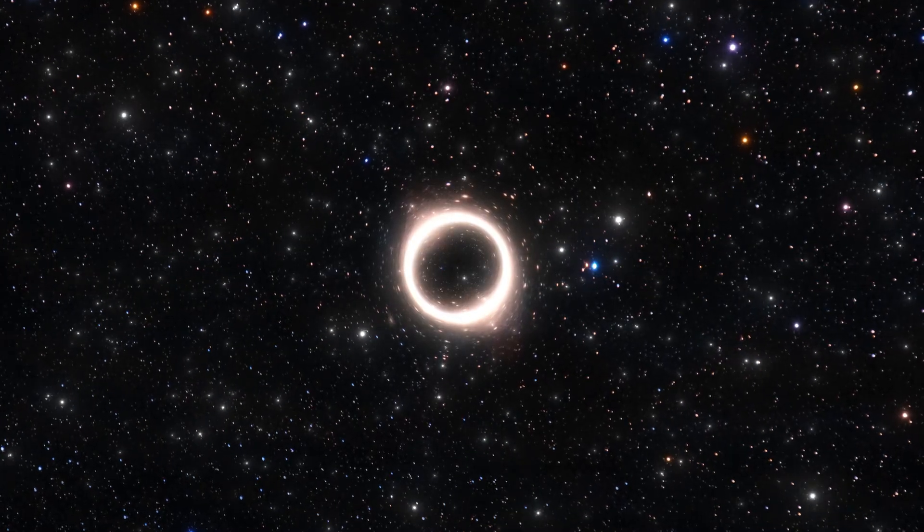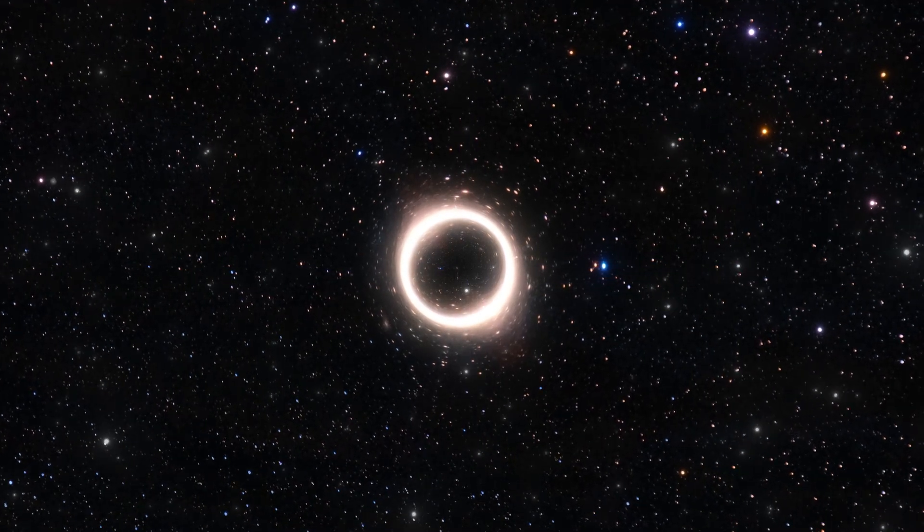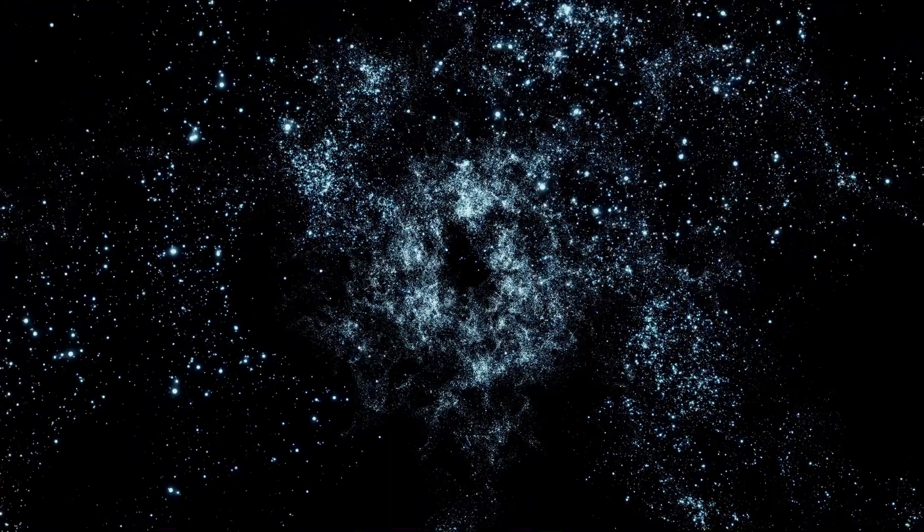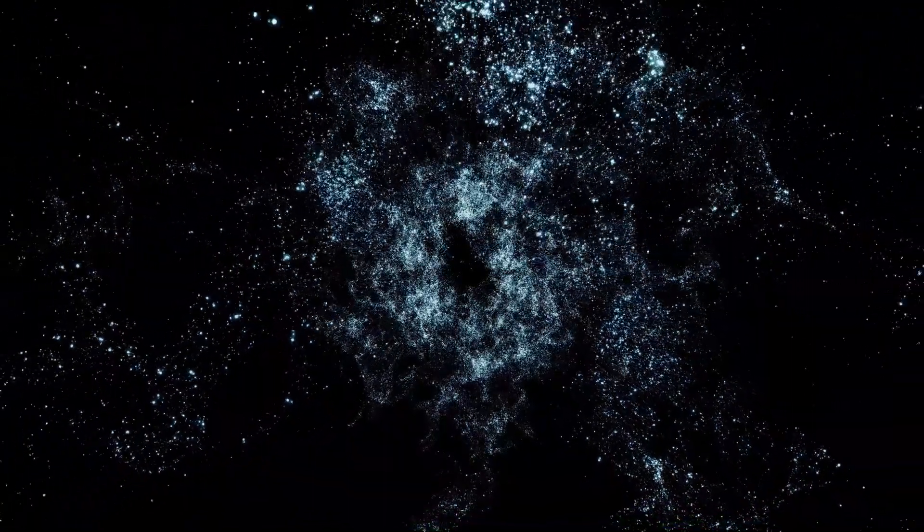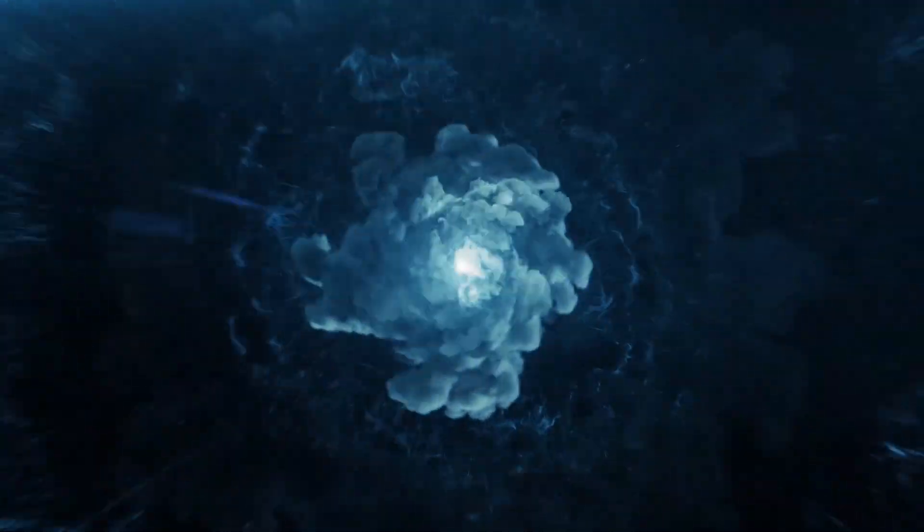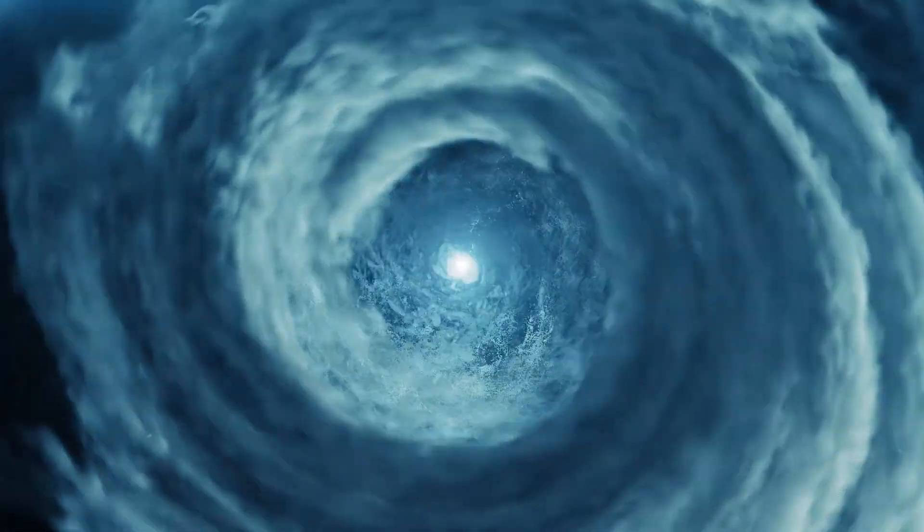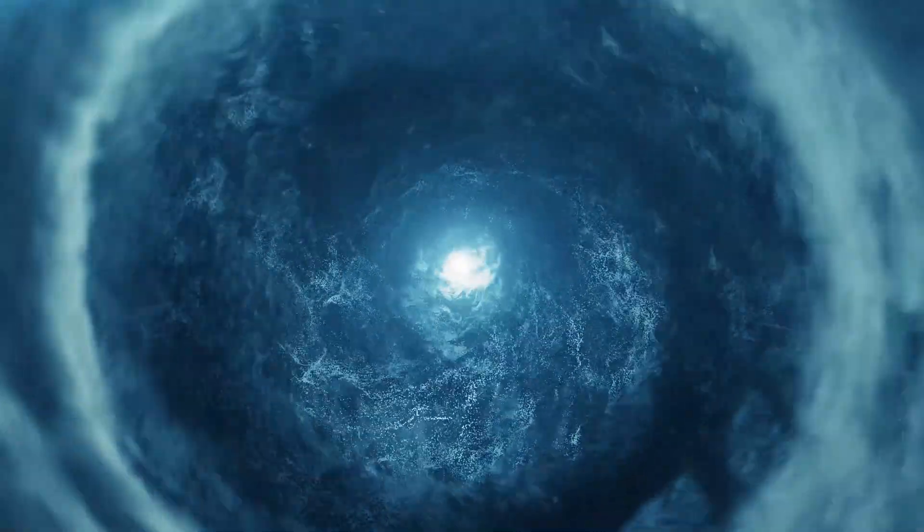This characteristic explains why the nascent universe didn't immediately turn into a massive black hole upon its emergence. Since its total mass was extremely small, a collapse was impossible. Only at later stages of development did sufficient clusters of matter form, creating gravitational fields from which even light could not escape.